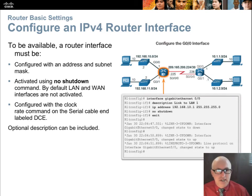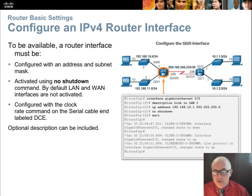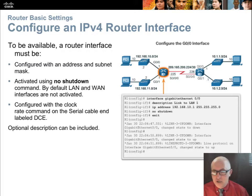Here's an example of configuring an IPv4 address for a router interface. Go into the interface from configuration mode, choose the interface you want, optionally give it a description (recommended), then assign it an IP address and a mask. The final thing you need to do is type 'no shutdown' — abbreviated 'no shut' — which turns the interface on. By default, all interfaces on the router are turned off until you activate them.